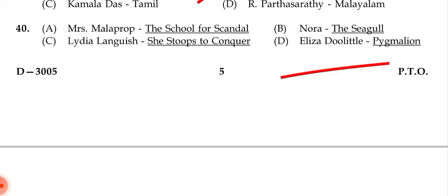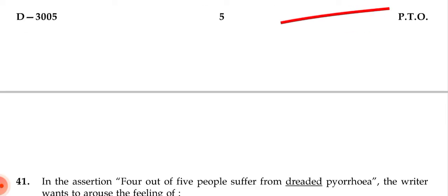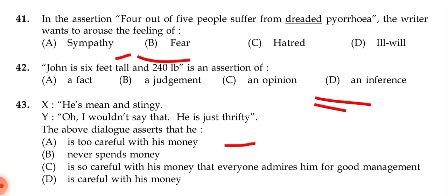Question 40: Options include Mrs. Malaprop/The School for Scandal, Nora/The Seagull, Lydia Languish/She Stoops to Conquer, and Eliza Doolittle/Pygmalion. The correct answer is (d): Eliza Doolittle is a character from Pygmalion.